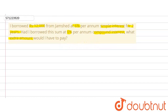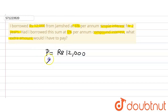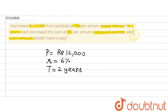Let's do this question. First of all, we will write what has been given: the principal is 12,000, the rate of interest is 6%, and the time is 2 years.